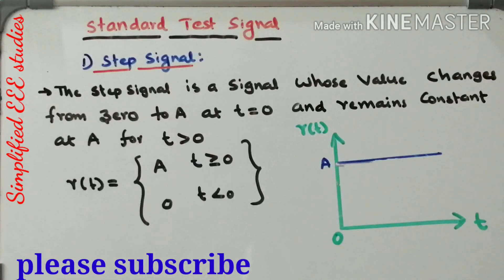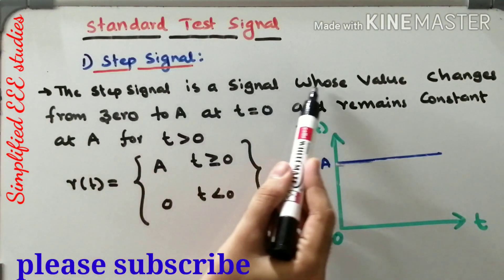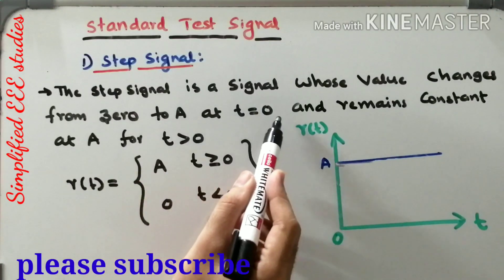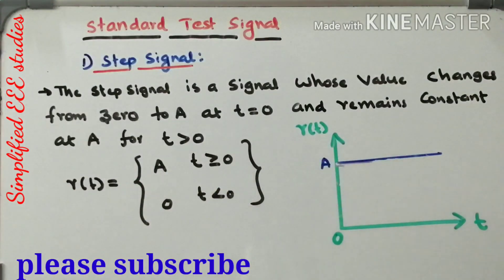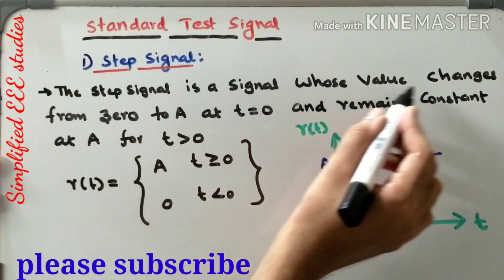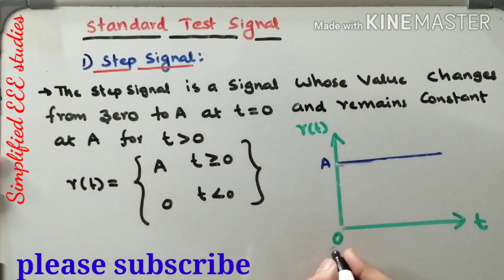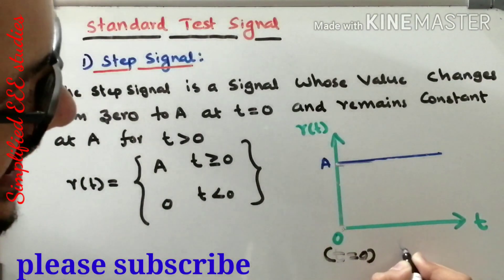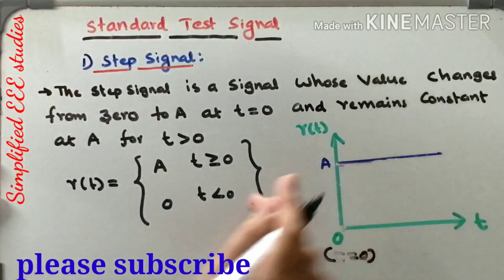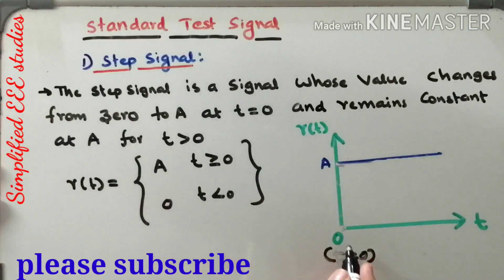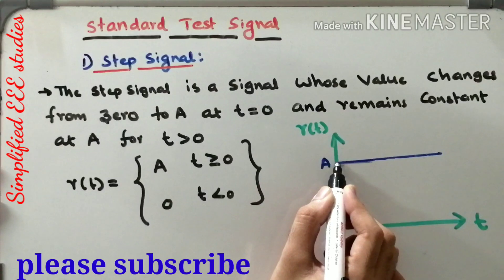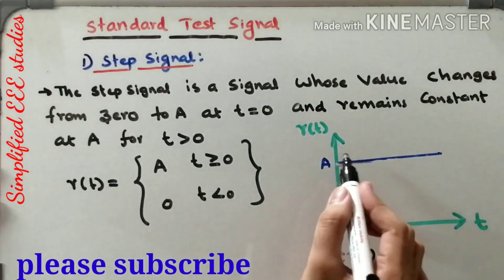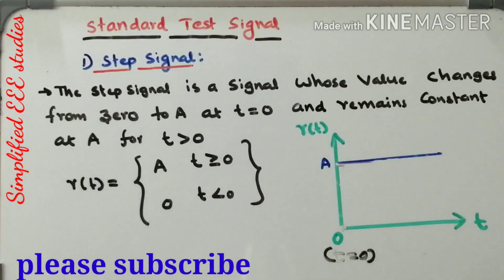Now I would like to discuss the step signal. What do you mean by step signal? The step signal is a signal whose value changes from 0 to A at t equal to 0, and remains constant at A for t greater than 0. Let us define the step signal with the help of a graph. Whenever t is greater than 0, the magnitude becomes constant. So this type of signal is known as step signal.